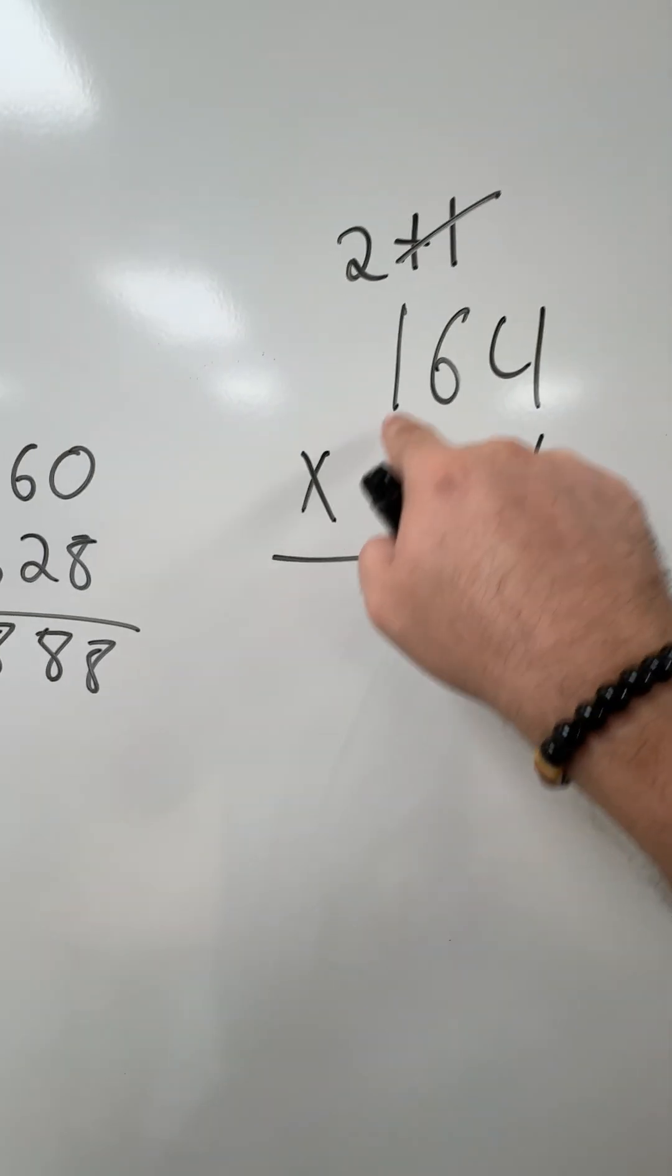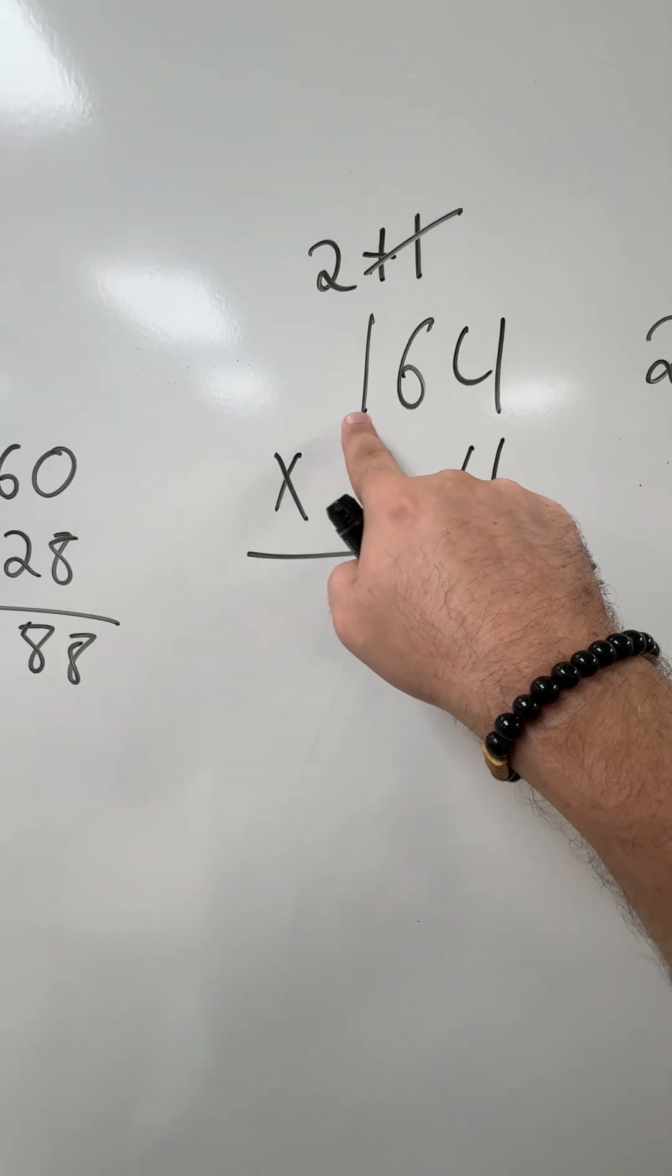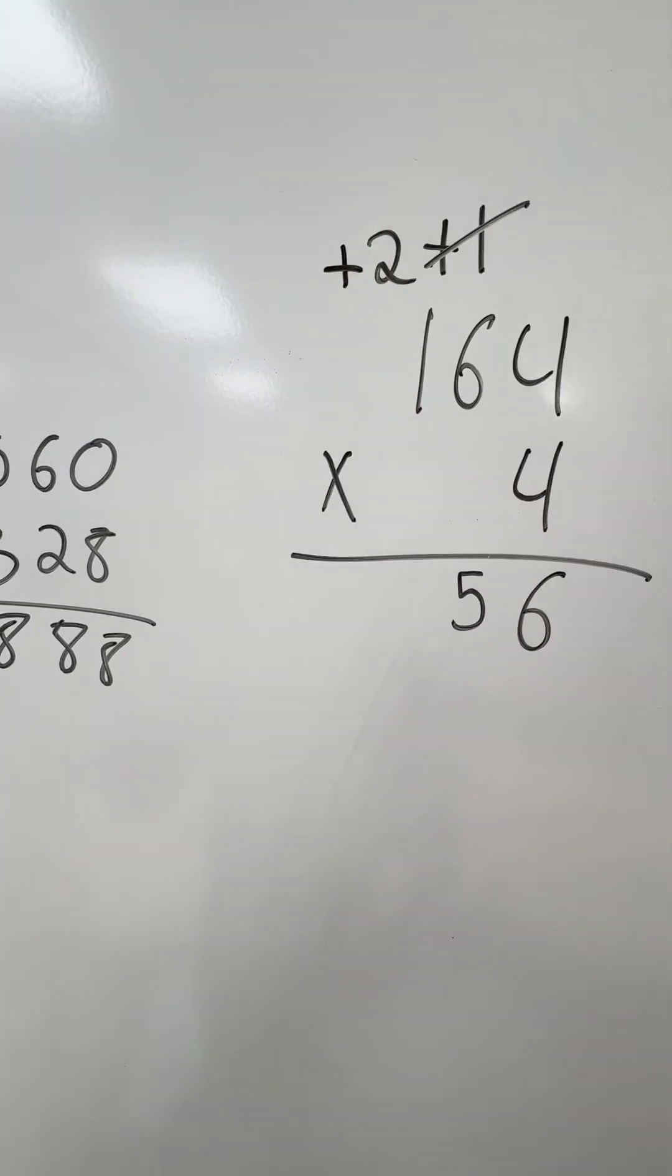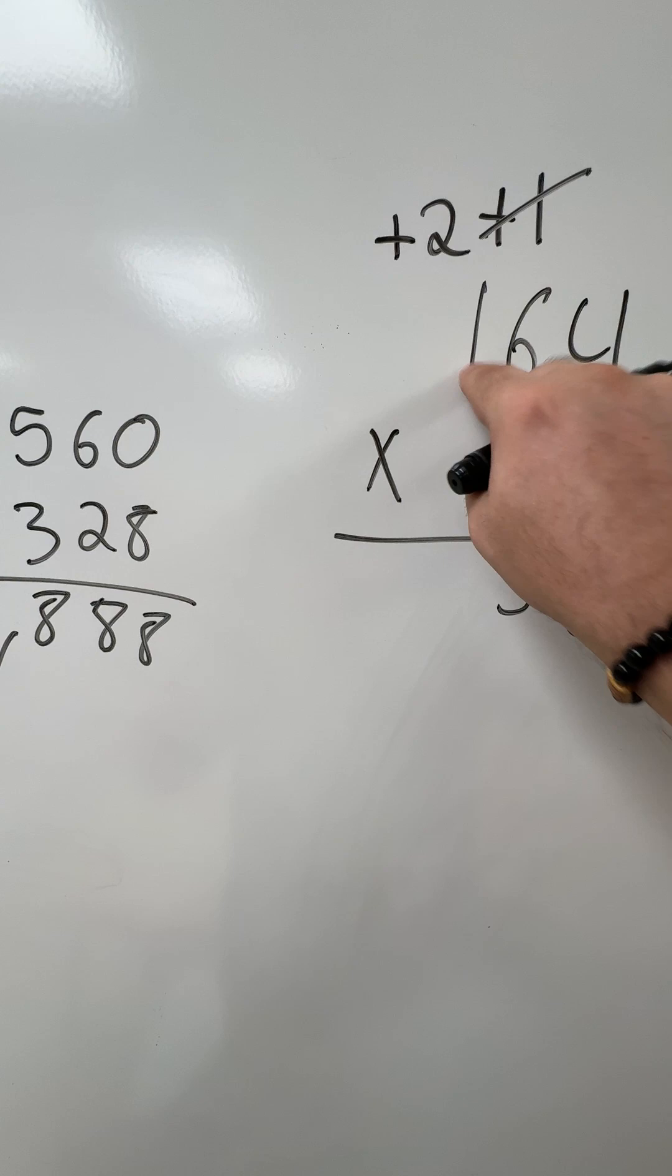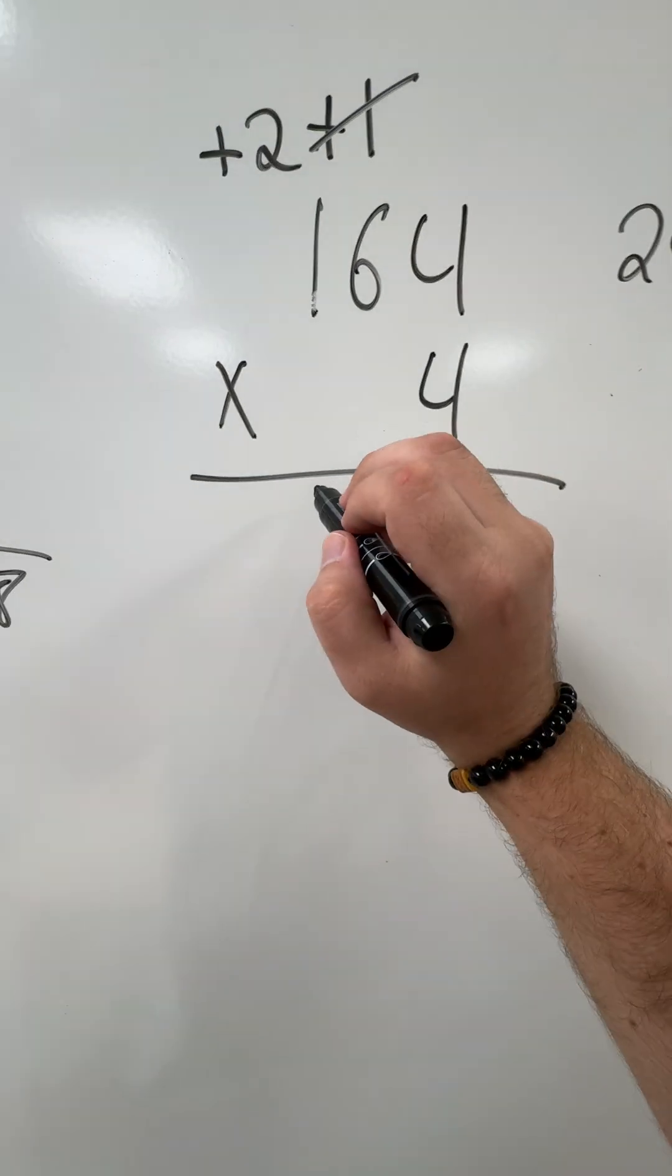Now I have 4 times 1 is going to be 4, then plus 2. 4 times 1 is 4, plus 2 equals 6.